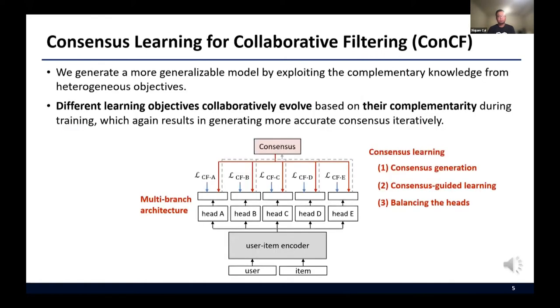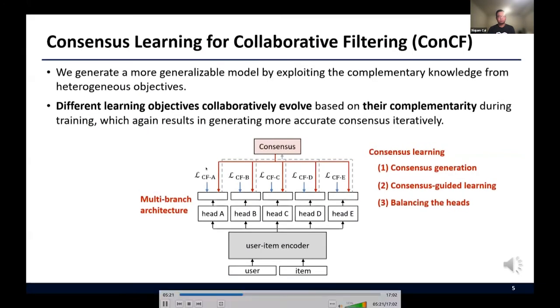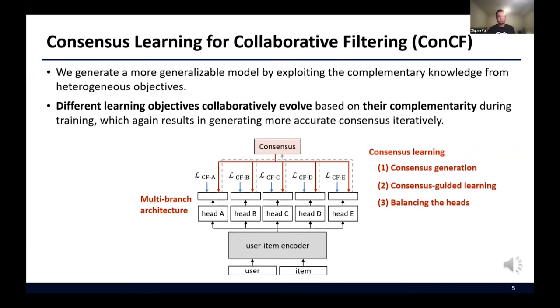Now, let me introduce our proposed learning framework, consensus learning for collaborative filtering, in short ConCF. ConCF exploits the complementary knowledge from heterogeneous objectives throughout the training process, generating a more generalizable model. As you can see in the below figure, we construct a multi-branch variant of a given target model by adding auxiliary heads, each of which is trained with different objective functions. Then we generate consensus of multiple views from different heads and enhance the performance of each head using the consensus. The improved heads generate more accurate consensus again, interactively boosting the recommendation quality throughout the training process.